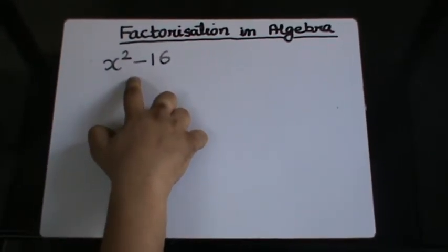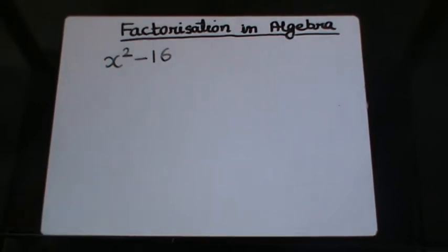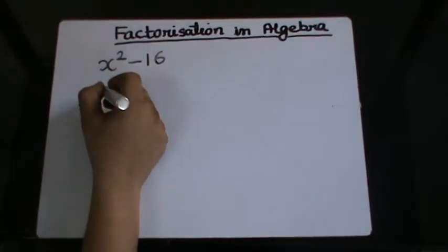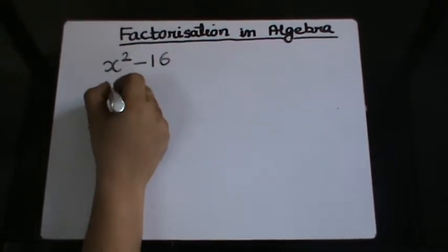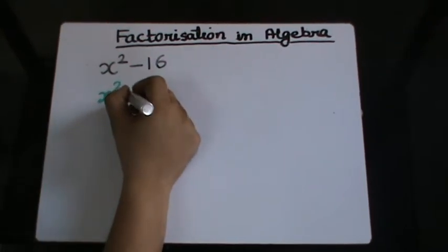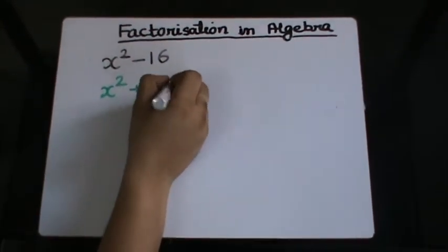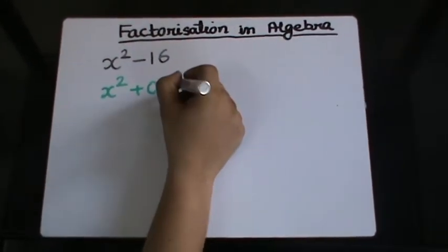So what we conclude is that 0 is actually the middle term. I can rewrite this as x² + 0x - 16.